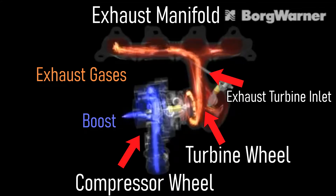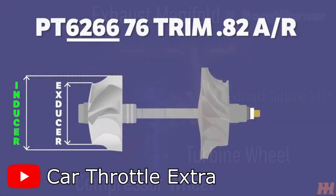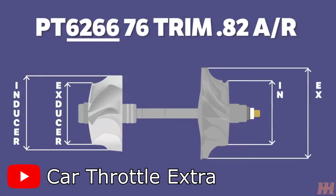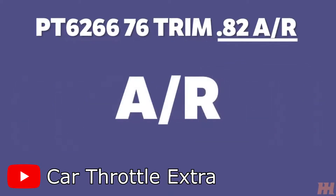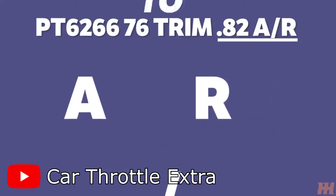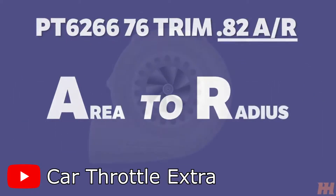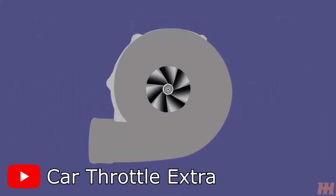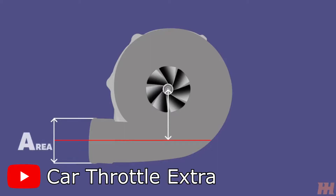There are many important factors in turbocharger design, such as compressor size, turbine size, and importantly for this video, the aspect ratio, or AR. The aspect ratio is the ratio of the area of the exhaust turbine inlet to the radius from the center of the turbine impeller.